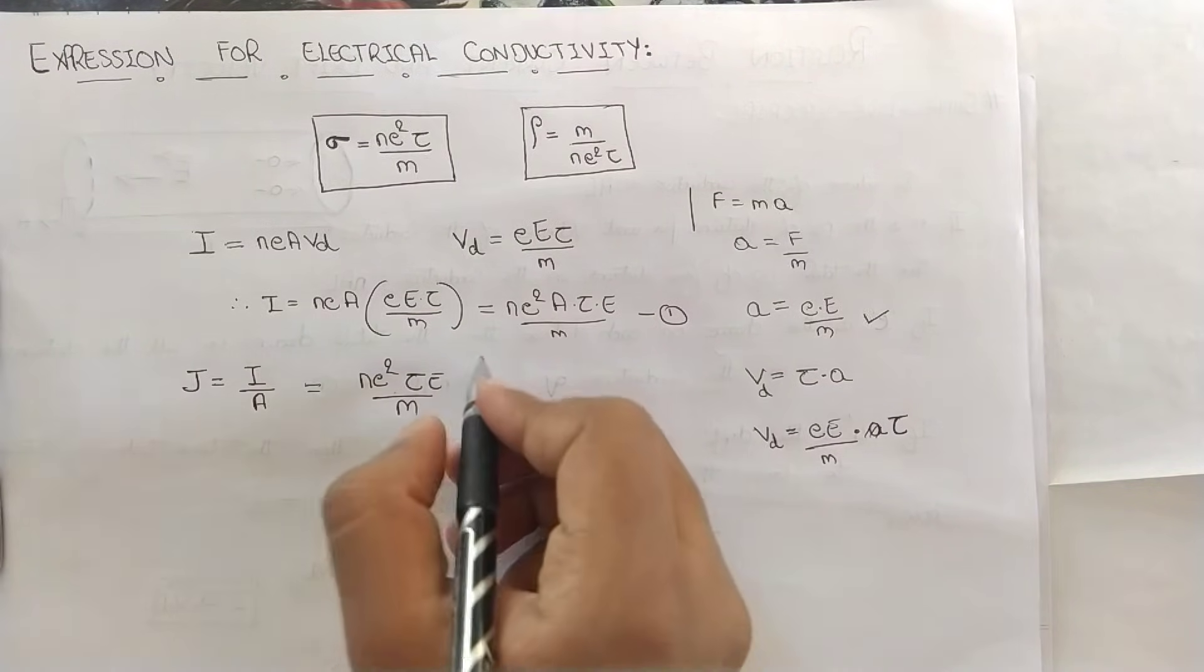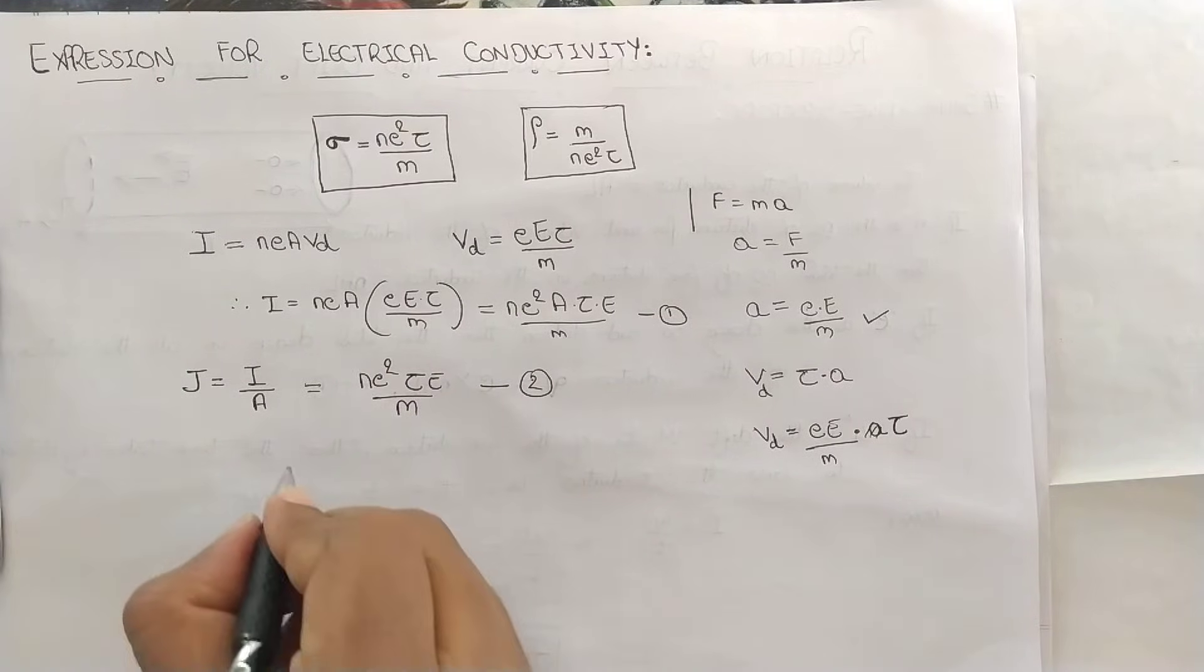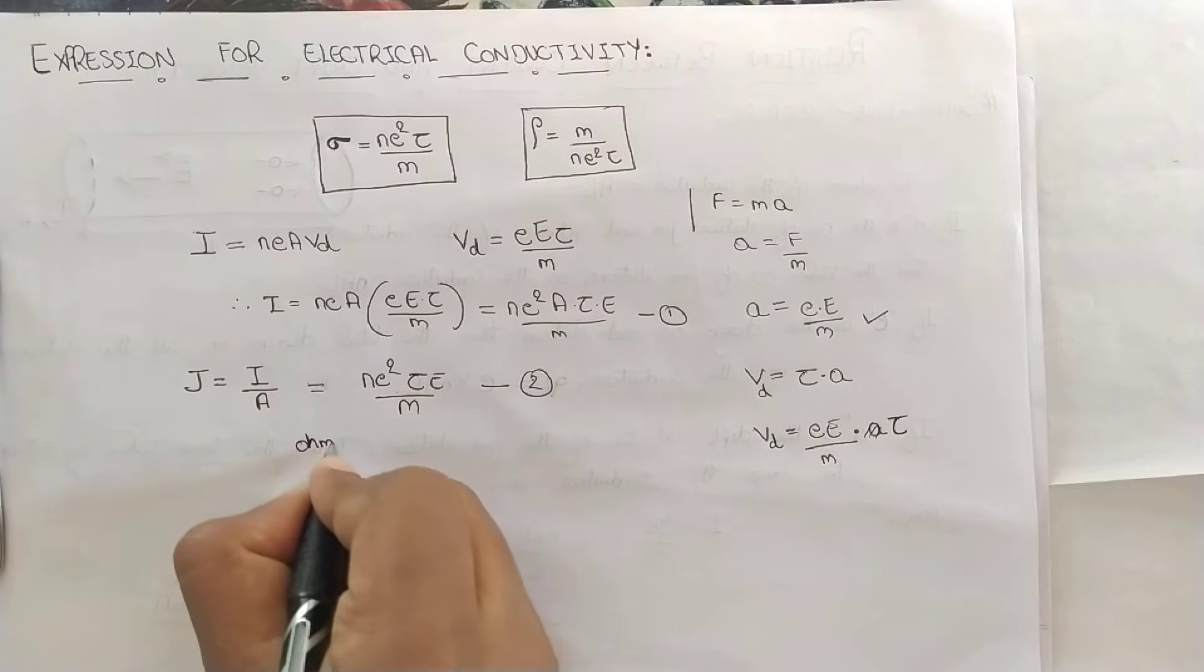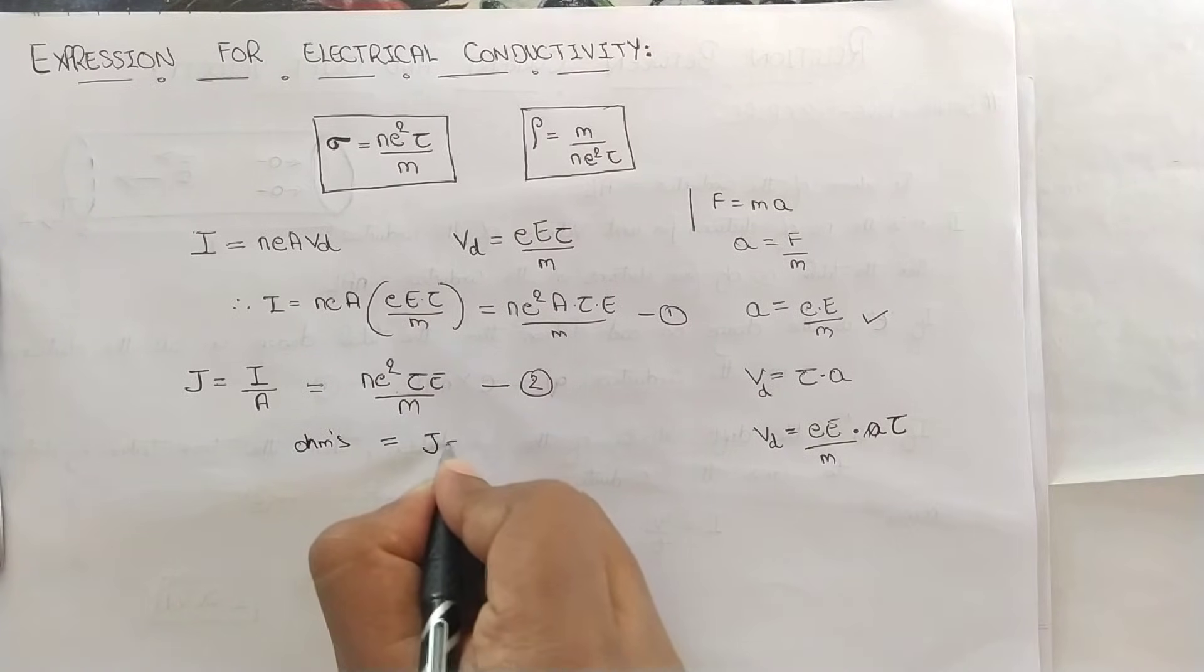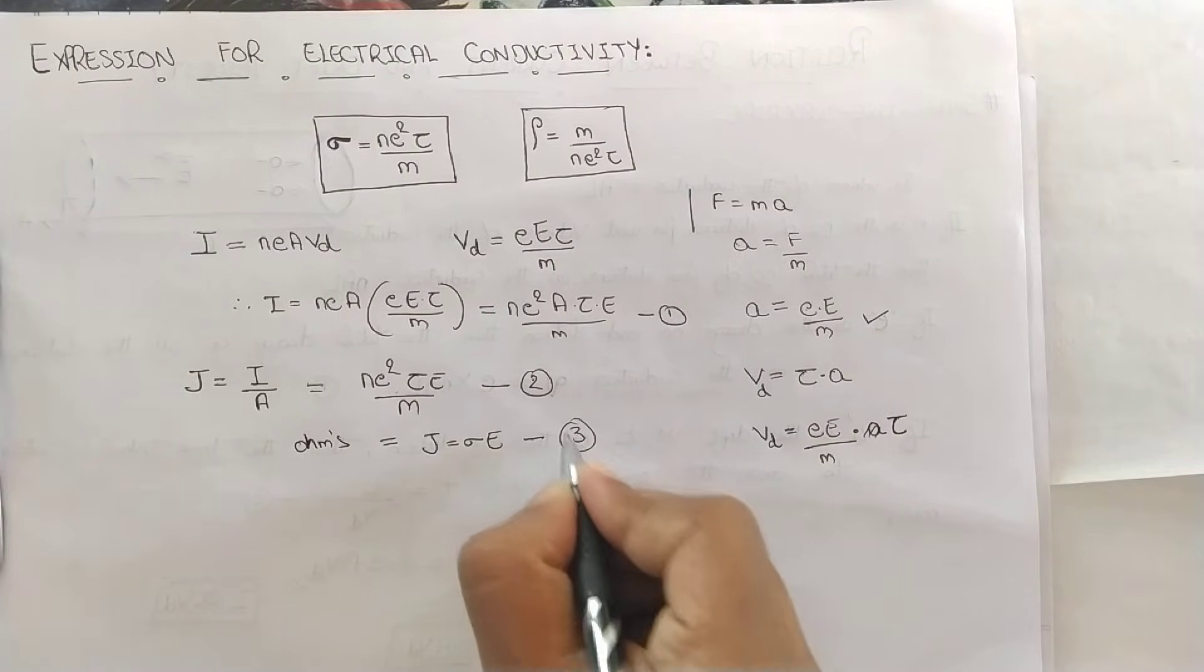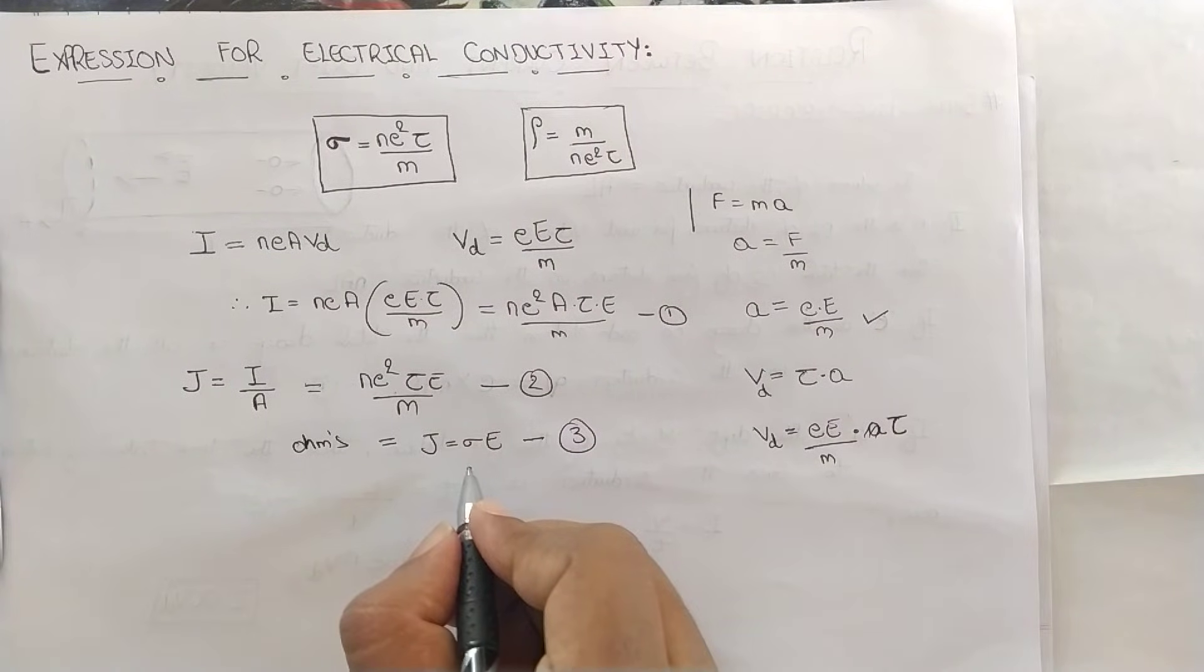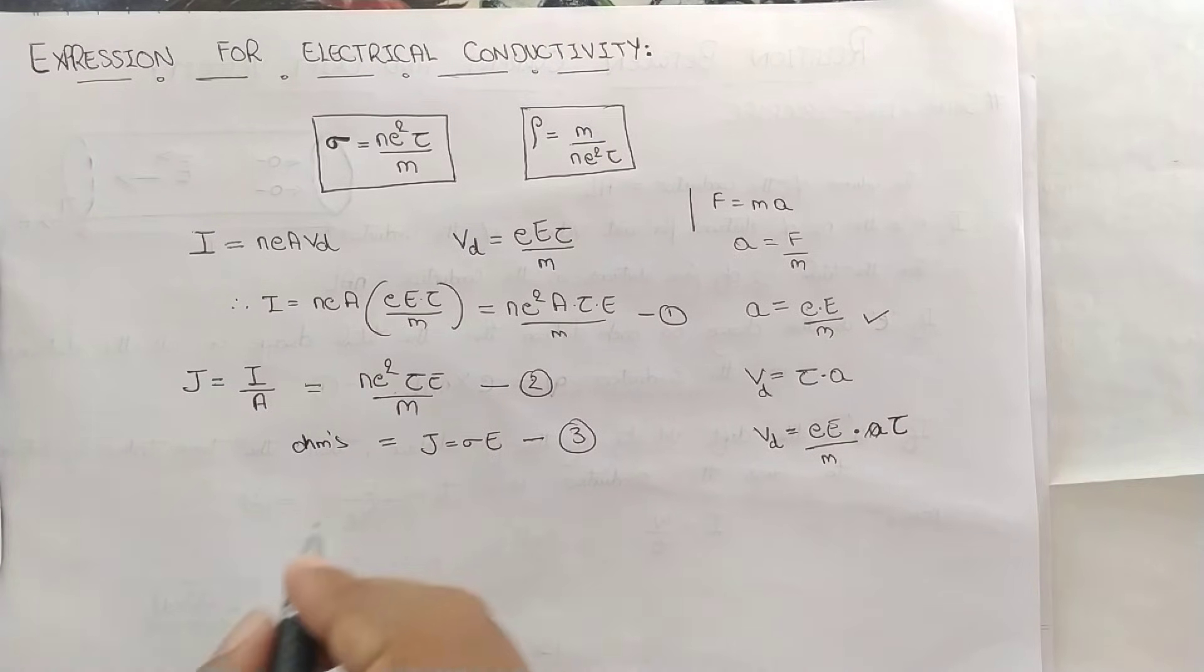Now what Ohm's law tells us. Ohm's law will give you J equals sigma into E. This is nothing but the current density is equal to the electrical conductivity into electric field applied.